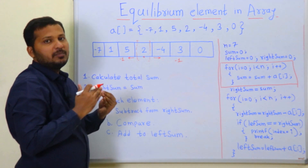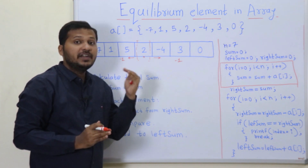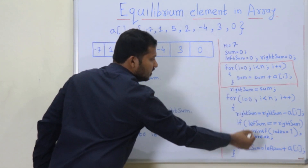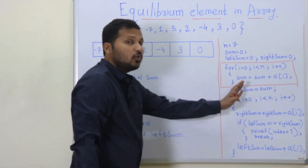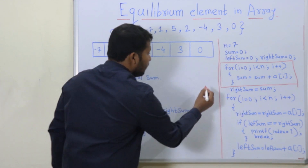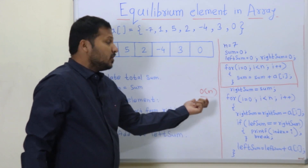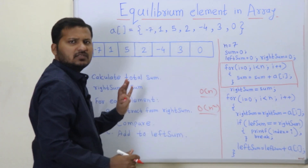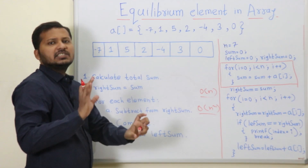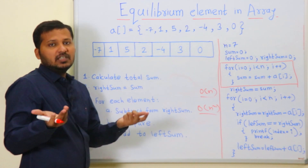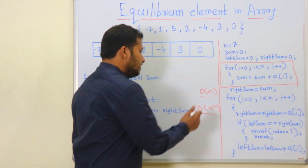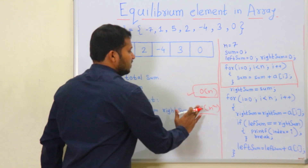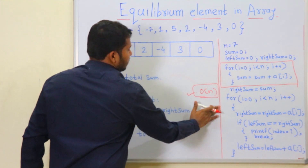Now that you understand equilibrium elements, let's see the algorithm to find one. This code gives us the equilibrium element in O(n) time complexity. O(n²) is easy — you just write two nested for loops and add elements on left and right. But writing the code in O(n) time complexity is tricky, and today we are going to see that.